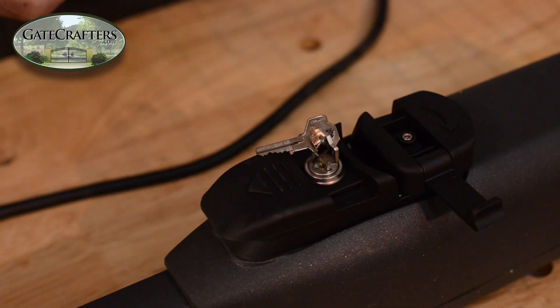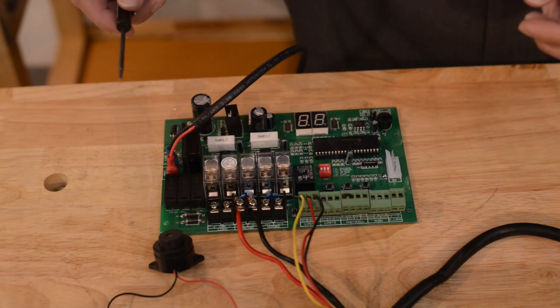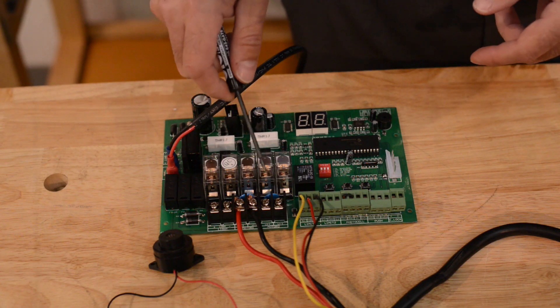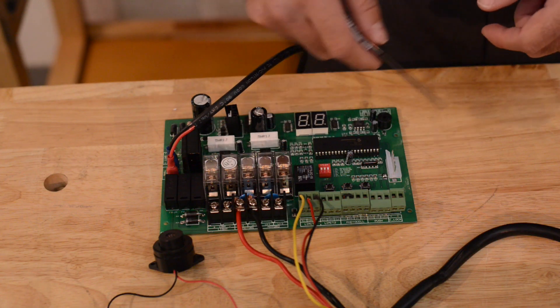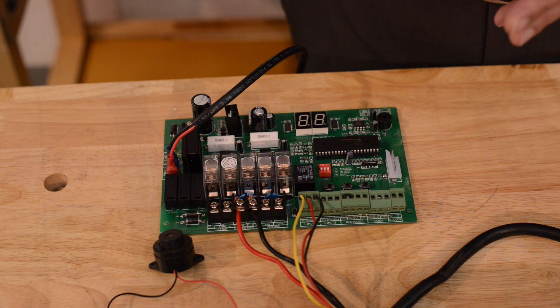Start with your gate in the closed position. You should already have power applied to your board and your motor wires and limit wires wired per the manual for either pull to open or push to open.